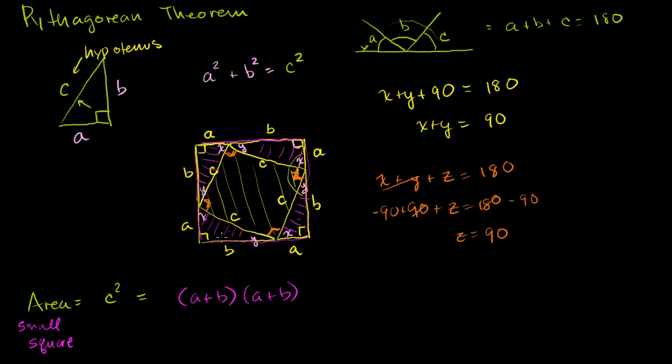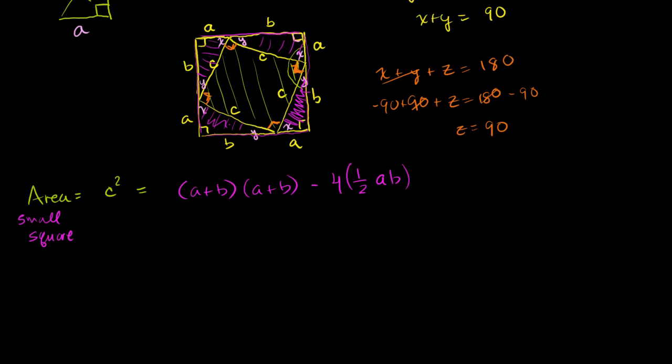But to get the area of our inner square, we still have to subtract out the area of these triangles. And what are the areas of these triangles? Well, the area of each of them is 1 half times base times height, or base times height AB, 1 half AB. That's the area of each of these triangles. Now we have 1, 2, 3, 4 of these triangles. So it's 4 times 1 half AB. Now let's do a little bit of algebra to simplify the right hand side. So A plus B times A plus B, A times A is A squared plus 2AB plus B squared. And then we have minus 2AB. 4 times 1 half is 2, so minus 2AB.